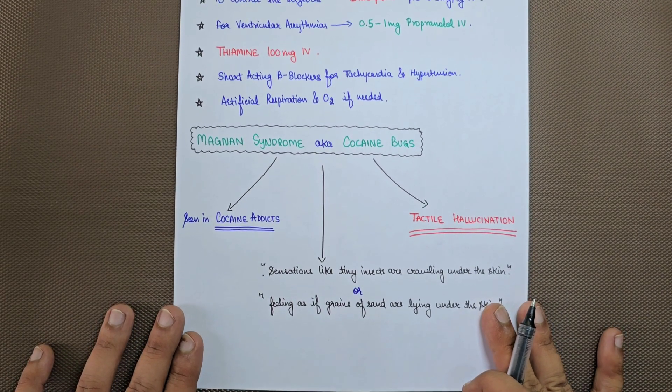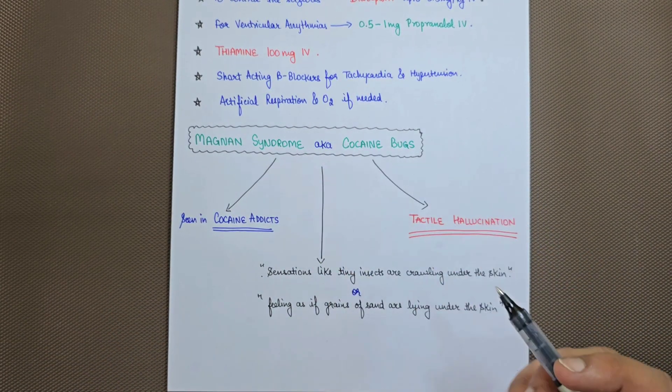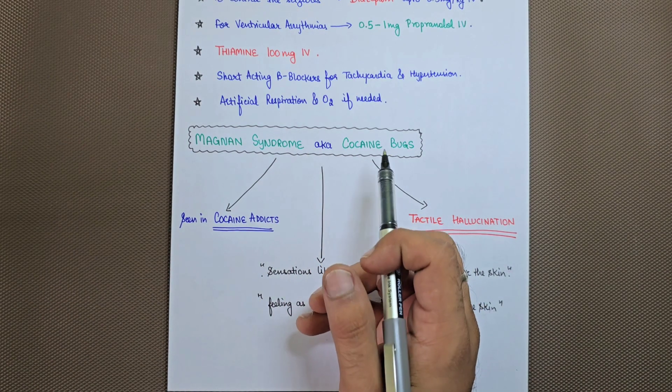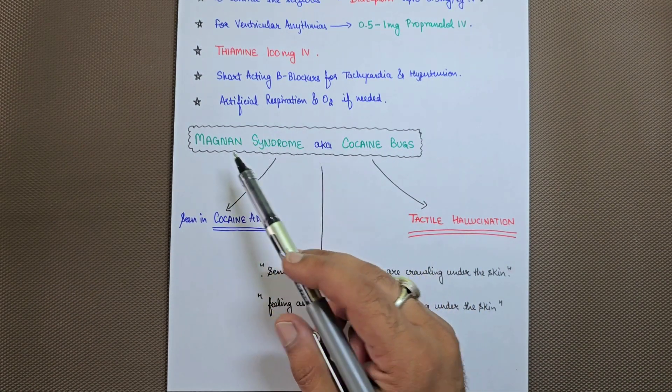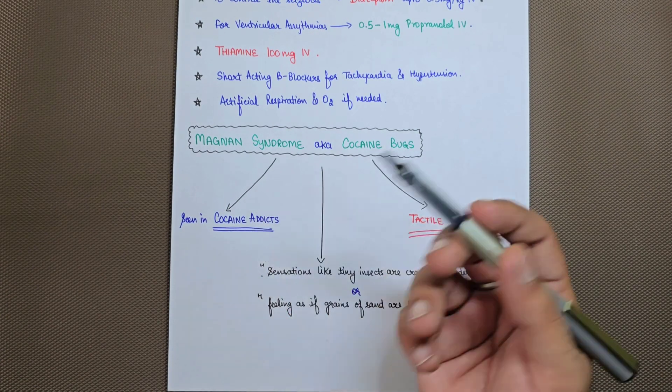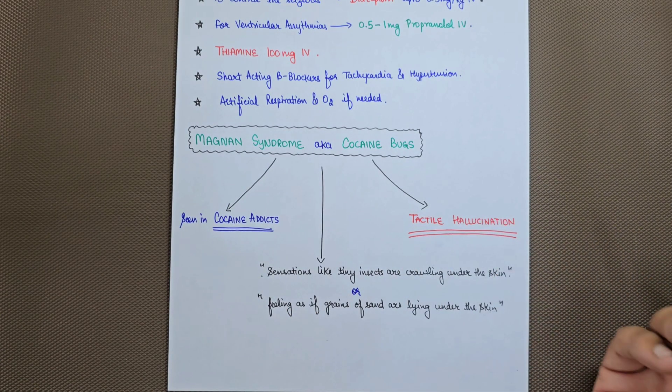There is another phenomenon related to cocaine overdose known as Magnan syndrome, also known as cocaine bugs. This syndrome is usually seen in cocaine addicts who consume it on a regular basis.